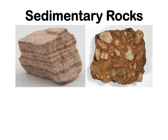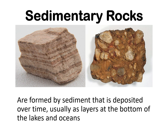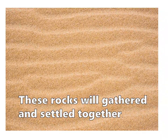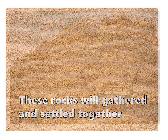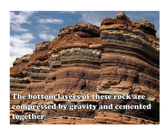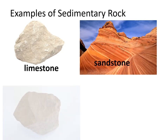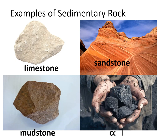Sedimentary rocks are formed by sediments that are deposited over time, usually as layers at the bottom of lakes and oceans. When igneous rock is broken down into very small pieces through weathering by wind, air, water, ice, and gravity, and transported across the planet, the rock will gather and settle together. The bottom layers are compressed by gravity and cemented together. Examples of sedimentary rocks are limestone, sandstone, mudstone, and coal.